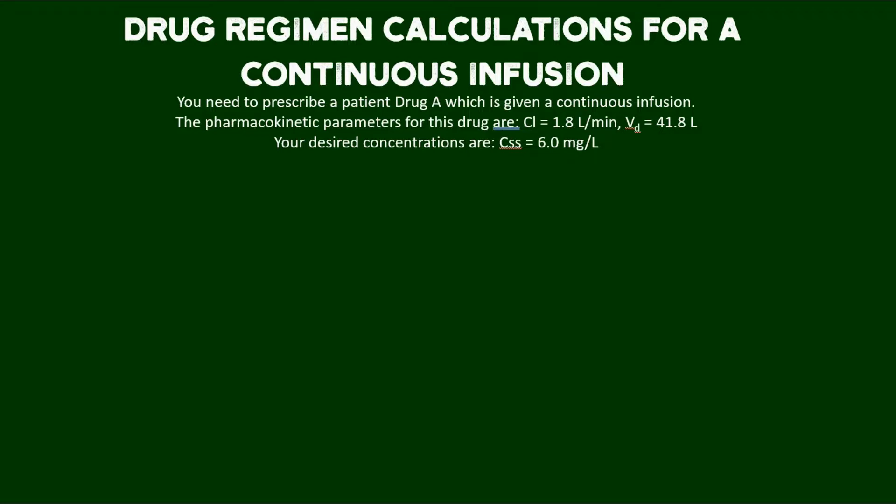The pharmacokinetic parameters for this drug are clearance, which is equal to 1.8 liters per minute, and volume of distribution, which is equal to 41.8 liters. Your desired concentrations for this continuous infusion to achieve therapeutic efficacy is 6.0 milligrams per liter.